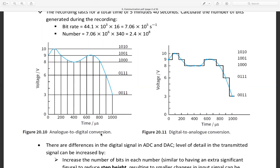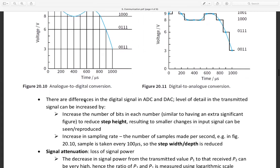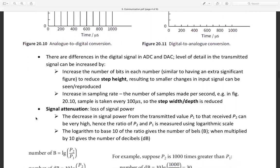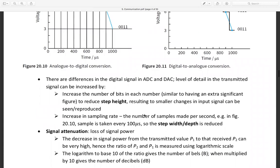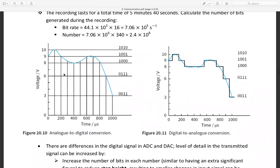This is analog to digital conversion. This is analog, digital. But if we do digital to analog conversion, we change from digital to analog. Finally we get boxes like this. There are differences in the digital signal in ADC, analog digital converter, and DAC, digital analog converter. The level of detail to transmit signal can be increased by: increasing number of bits, similar to having extra significant figures, to reduce step height, resulting in smaller changes in input signal that can be sensed. And increase sampling rate, the number. I repeat again about analog to digital or digital to analog.